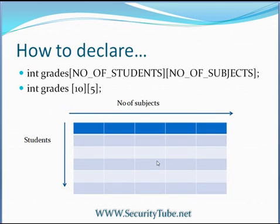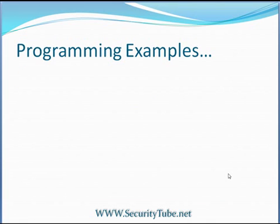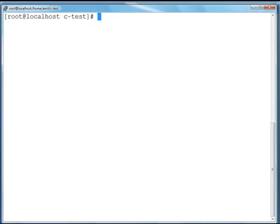A pictorial representation: the first index is rows, so number of students will be represented as number of rows, and the second index is columns, so number of subjects will be represented as columns. So there will be 10 rows and 5 columns in our array according to our second declaration. Now let's go straight to a programming example.